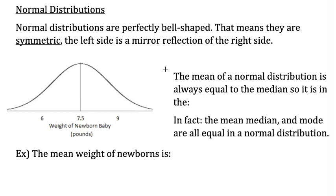A normal distribution is symmetrical and bell-shaped — people even call them bell curves sometimes. It is commonly used in various fields such as finance when analyzing stock prices, psychology to describe personality traits, industry when doing quality control, and of course in statistics to interpret large amounts of data, make predictions, and solve complex problems.